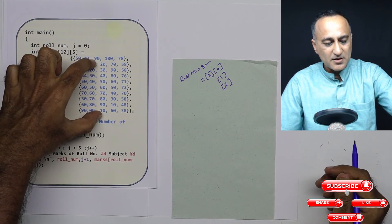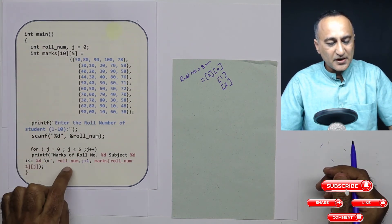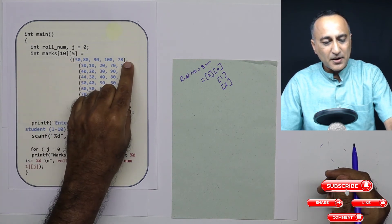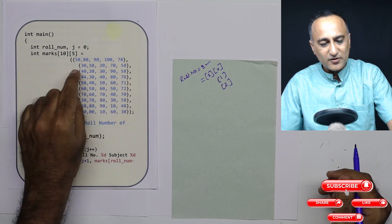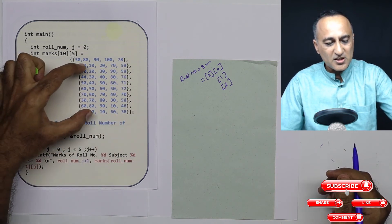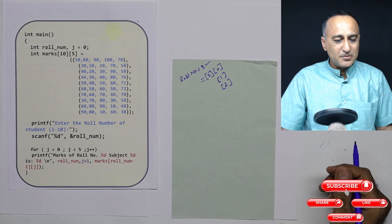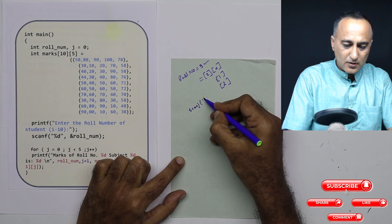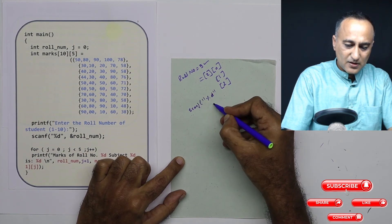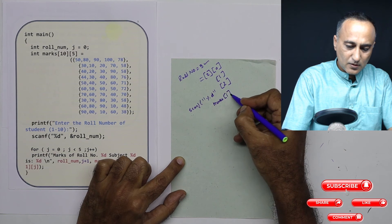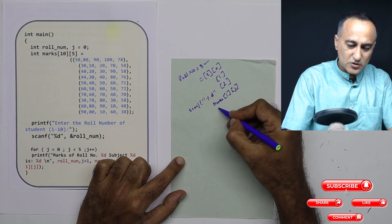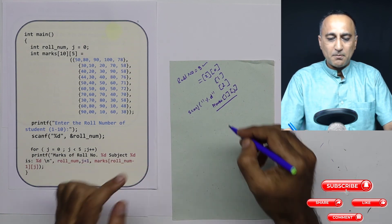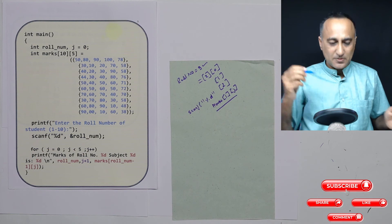This is how you initialize a two-dimensional array and print its values. Each row is preferably initialized inside curly brackets, with a comma between numbers and a comma after each row, making the initialization very clear. If you had to read numbers instead, you would use scanf with %d and marks[i][j] — that would be the way of reading marks for the i-th student and j-th subject.